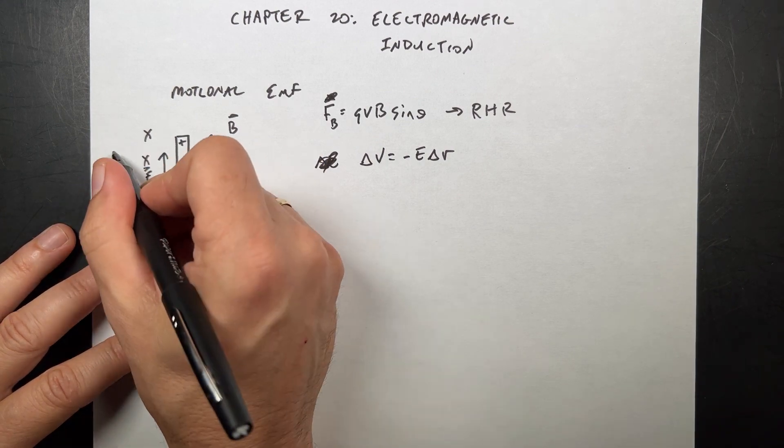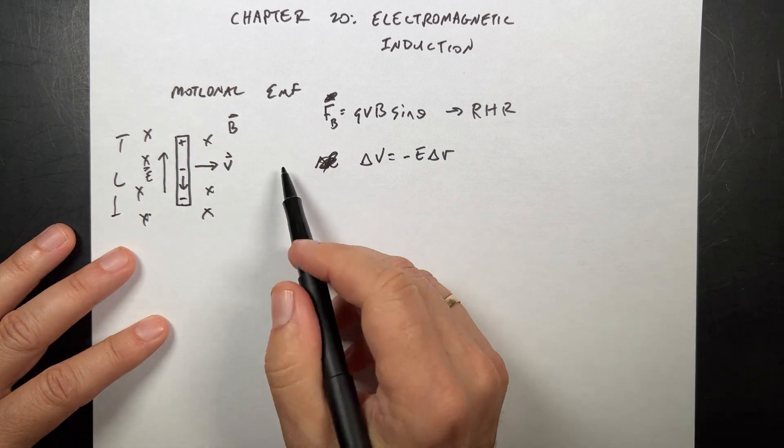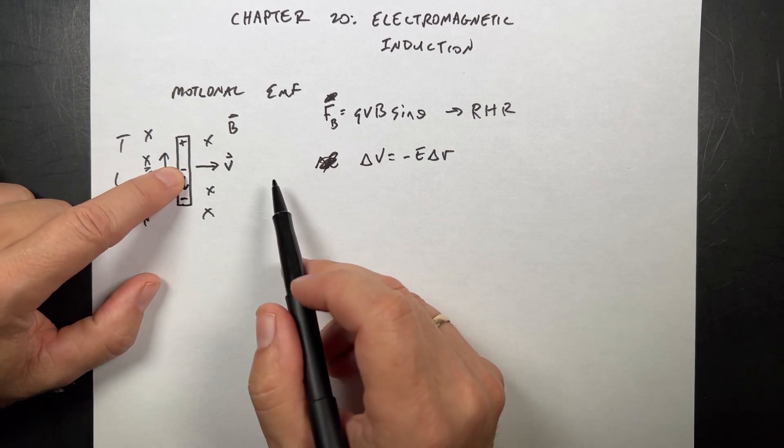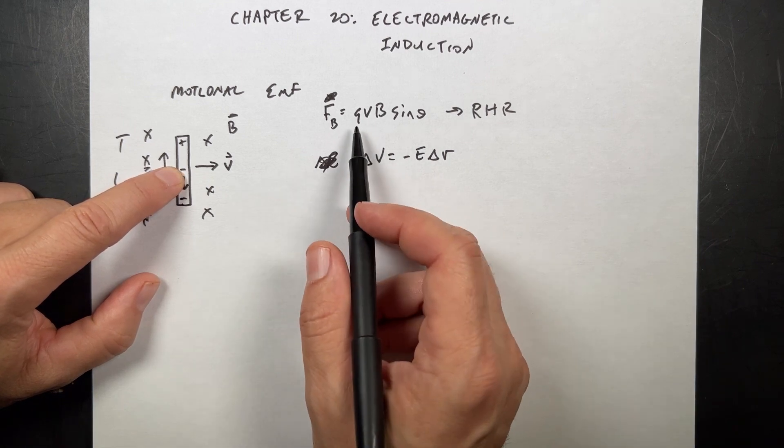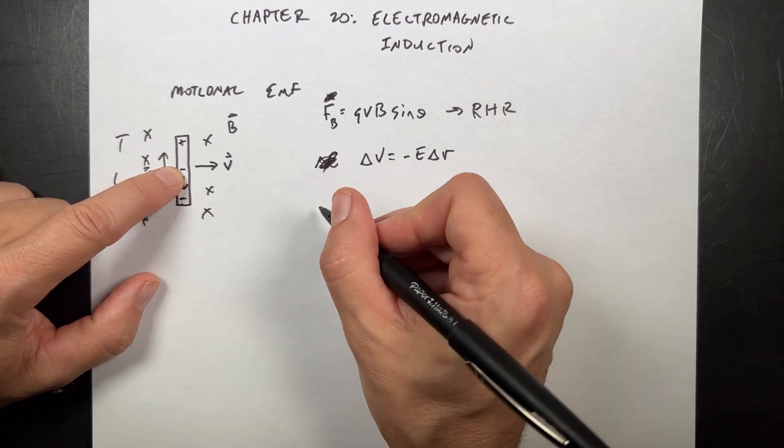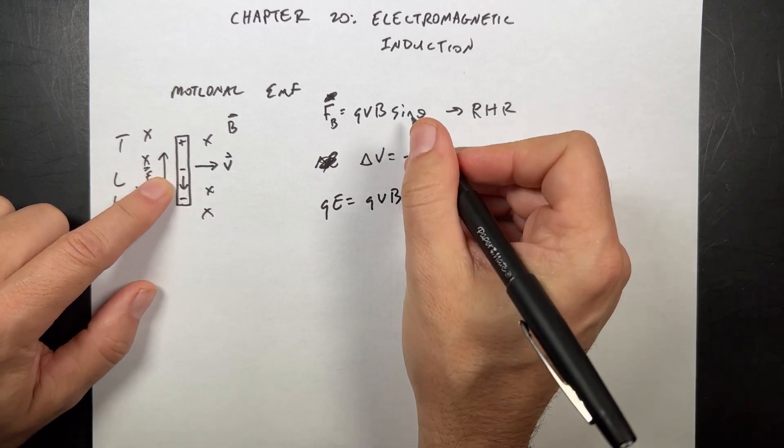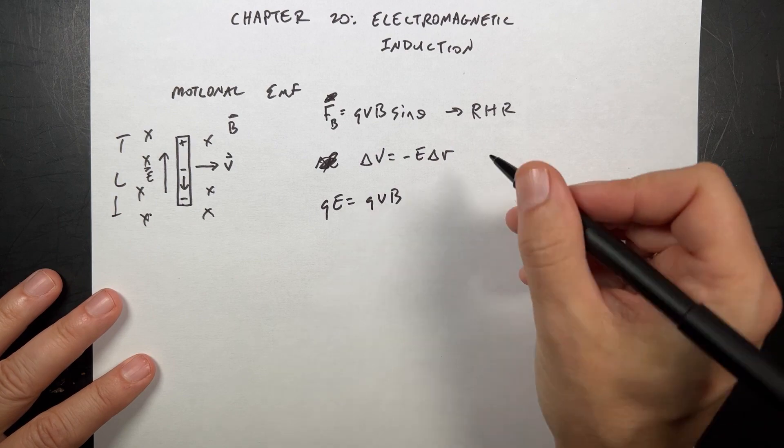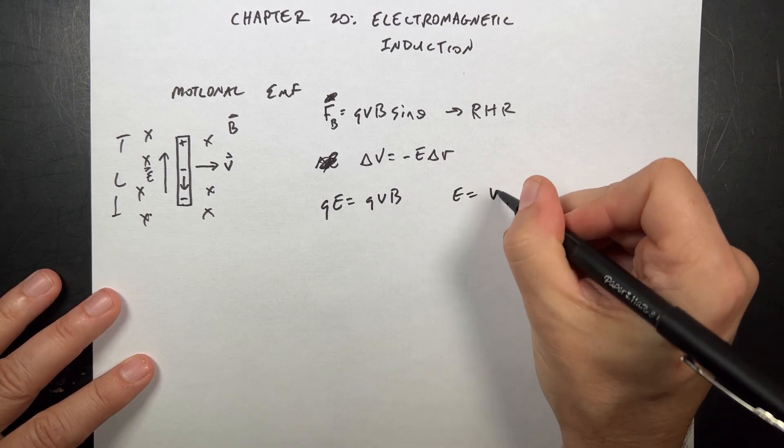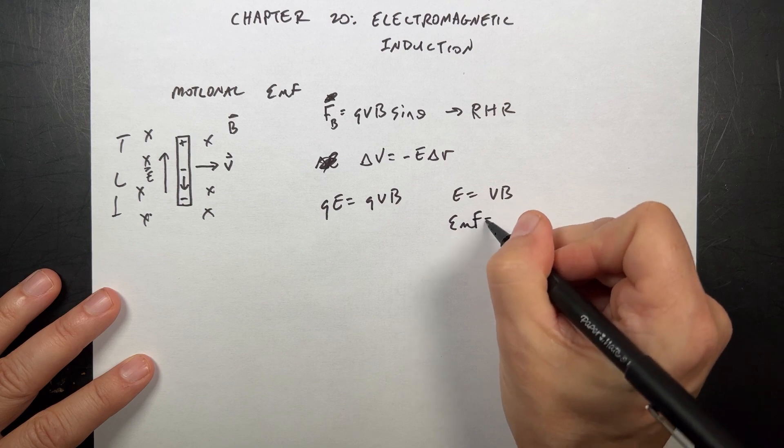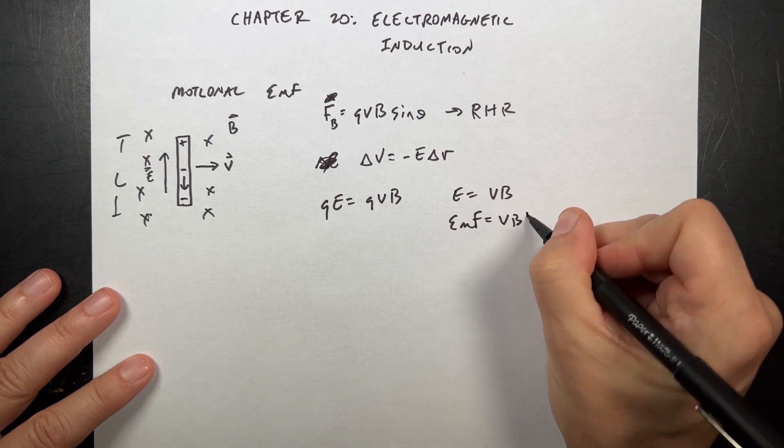So this has a length L. Then I can calculate the strength of the electric field has to be such that it balances this. So QE has to be equal to QVB sine theta is zero. So E is equal to VB. So the change in potential EMF is VBL.